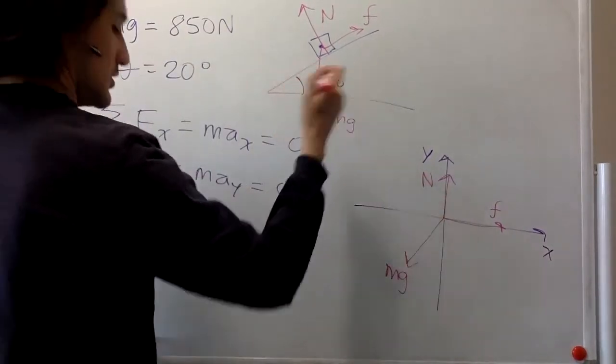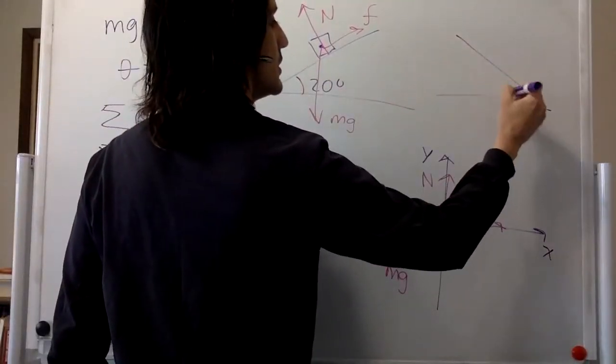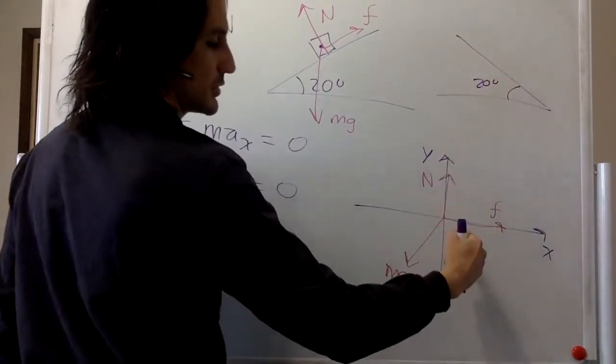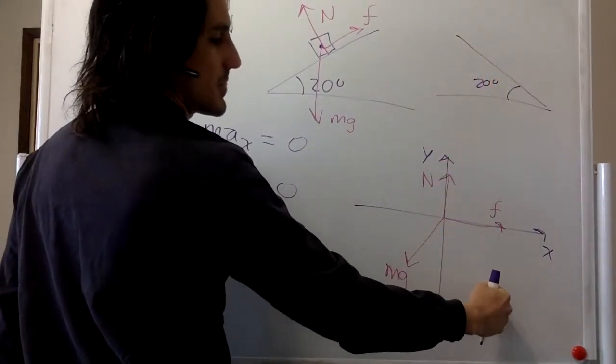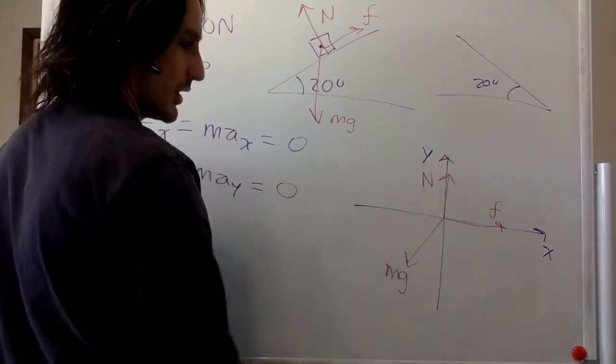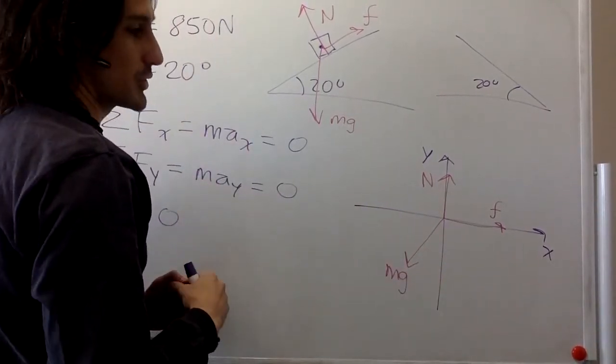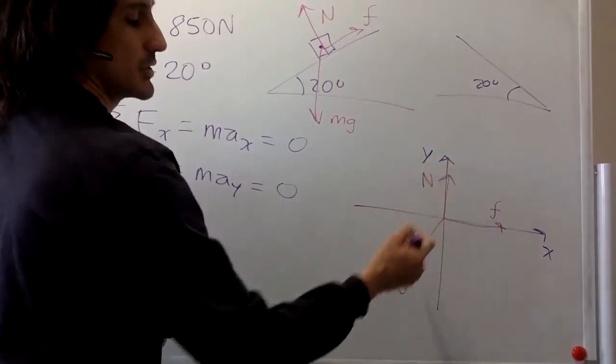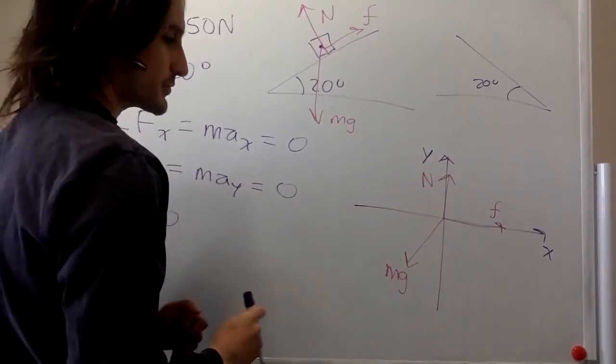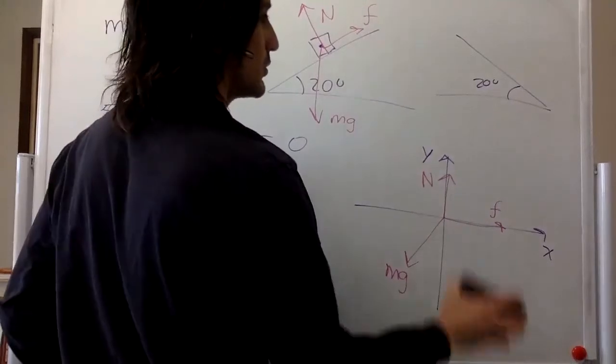And notice that if we draw this one the other direction, then the weight will be in this direction and the friction will be towards this direction. But it doesn't matter for purposes of what we're trying to answer, which is the magnitude of the normal. It will be the same in both cases.